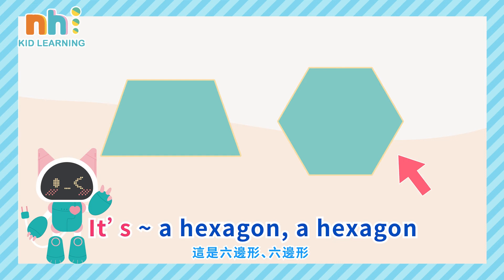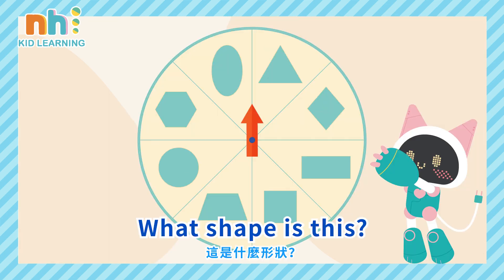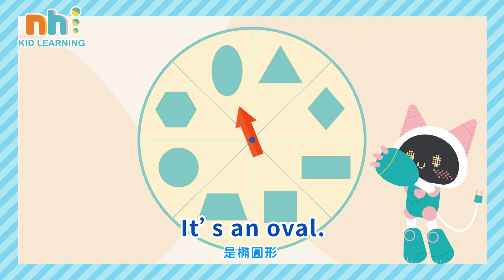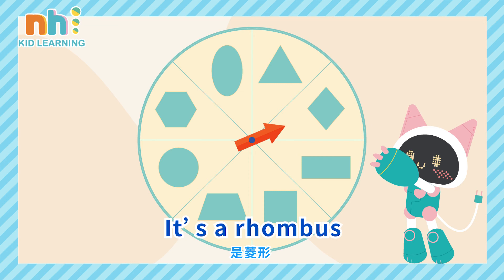It's a hexagon. A hexagon. What shape is this? It's an oval.